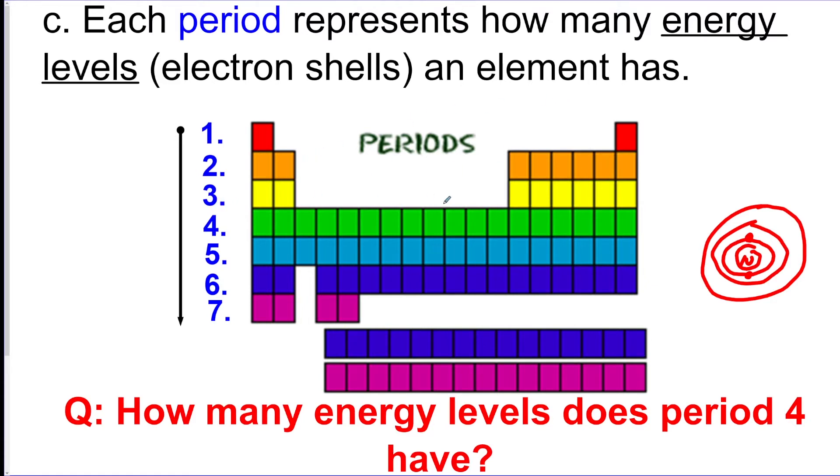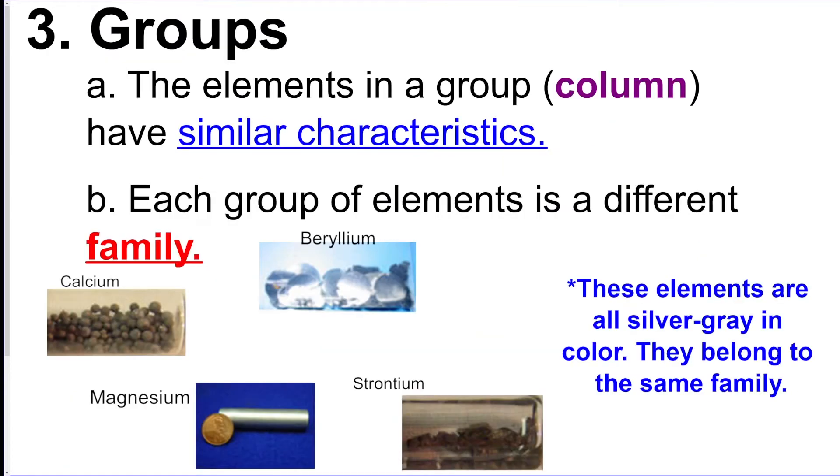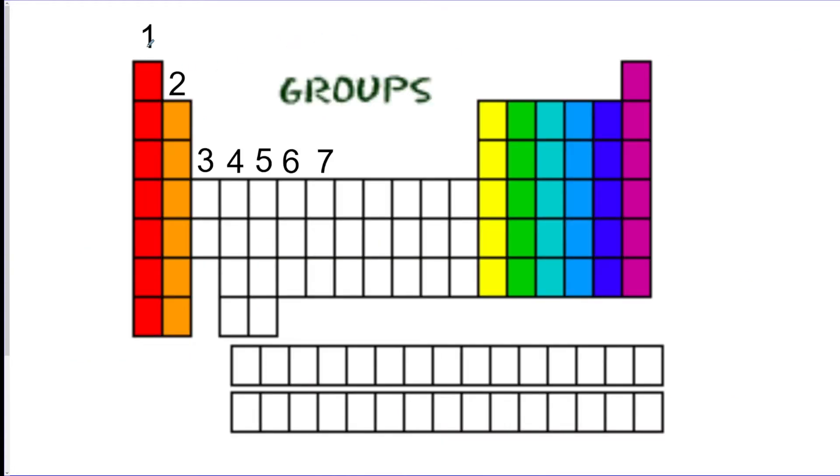Now the groups are the columns. They go up and down. The elements in each group have similar characteristics to one another. We call them families because if you think of a family, people look similar in the family but they're definitely different from one another. So here are groups: group one, group two, group three, going up and down, and we got eighteen at the last one.